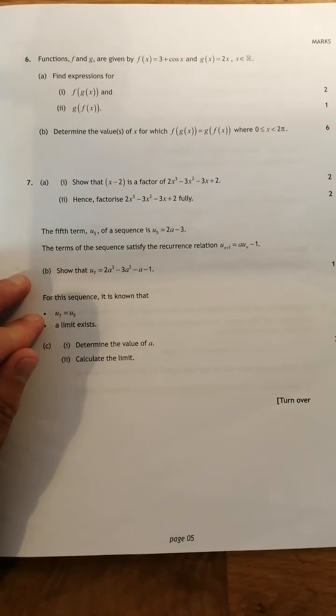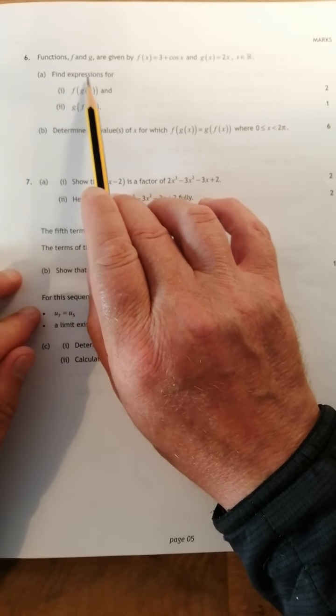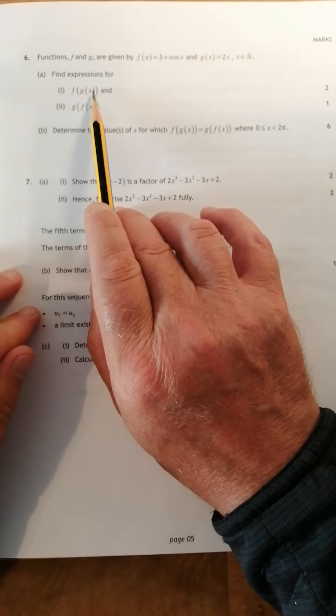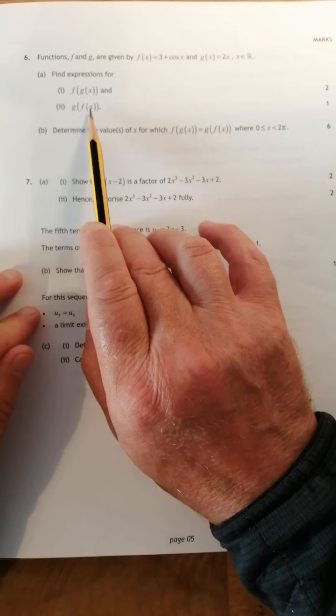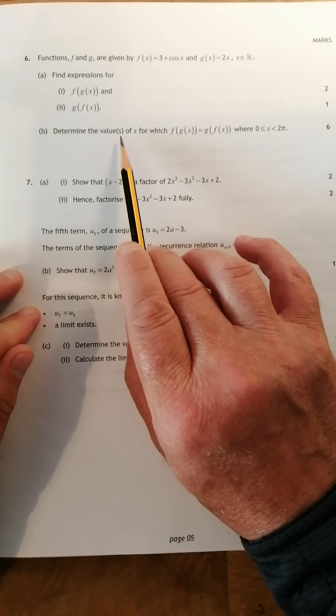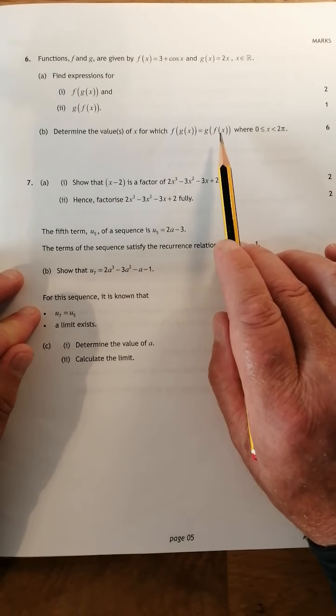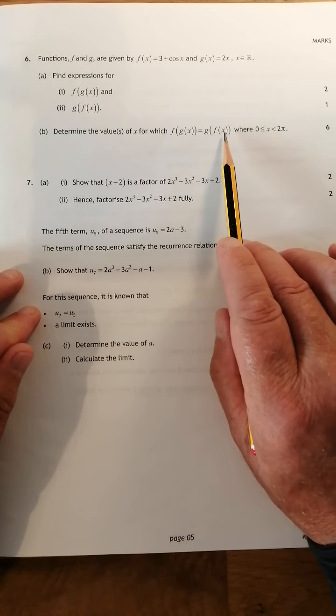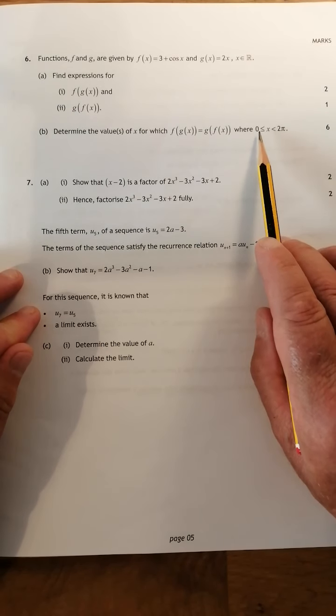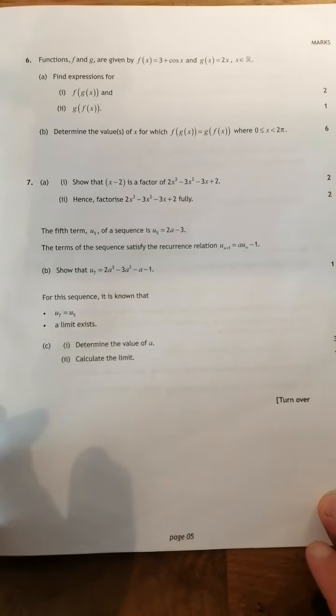So x can be any number you can think of. Part 6a asks to find expressions for f of g of x and g of f of x. Then part b asks to determine the values of x for which f of g of x equals g of f of x, where x lies between 0 and 2π, so your answer has to be given in radians. Let's go to the maths.